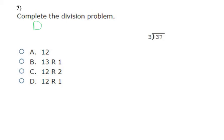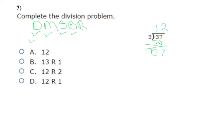Here's another division problem with those same steps. How many times does three divide into three? Once — so I write a one, multiply one times three is three, subtract to get zero, then bring down the seven. Repeat: how many times does three divide into seven? Twice — write a two, multiply two times three is six, subtract to get one. No numbers left to bring down, so my remainder is one. Final answer: 12 remainder one, which is choice D.